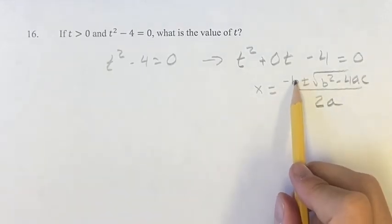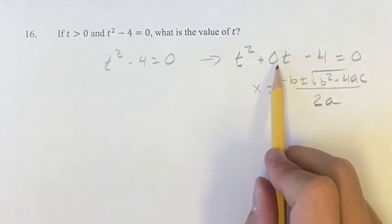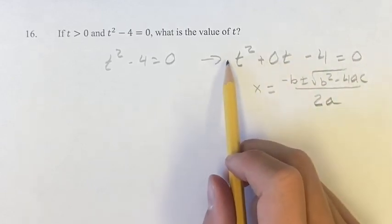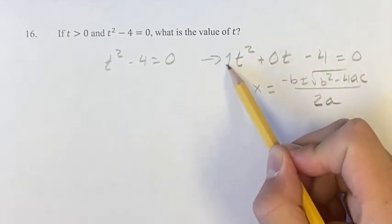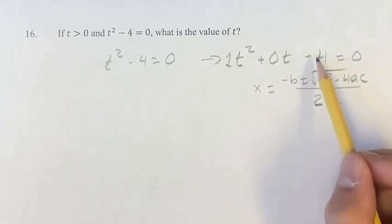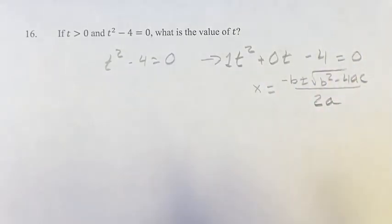where b is the coefficient for the t term, which is 0, a is the coefficient for the t squared term, which is 1, and c is your constant, which is negative 4. Plug that in, you will get your values of t,